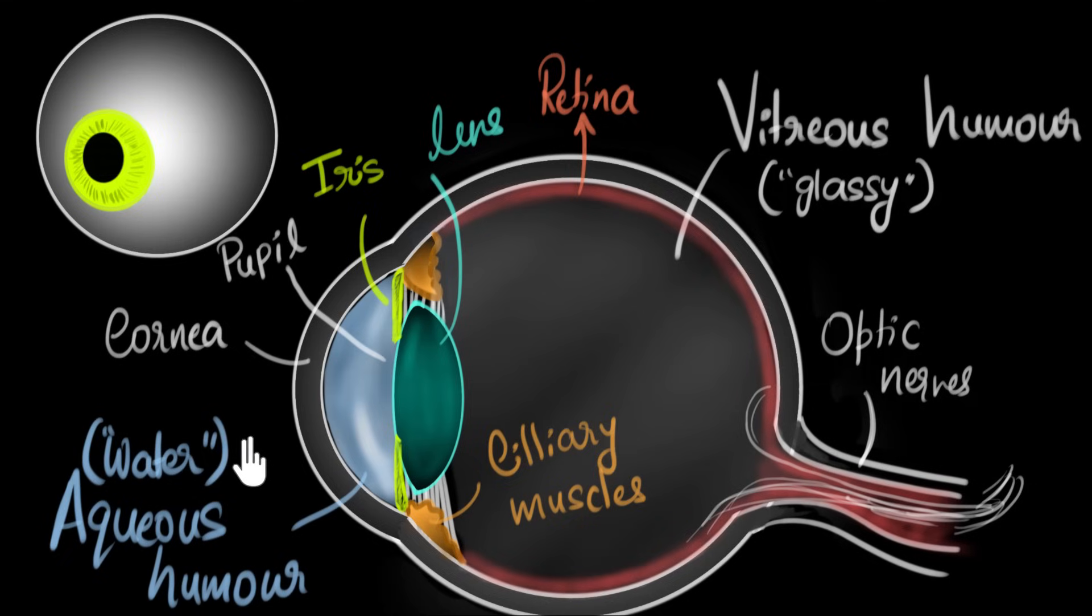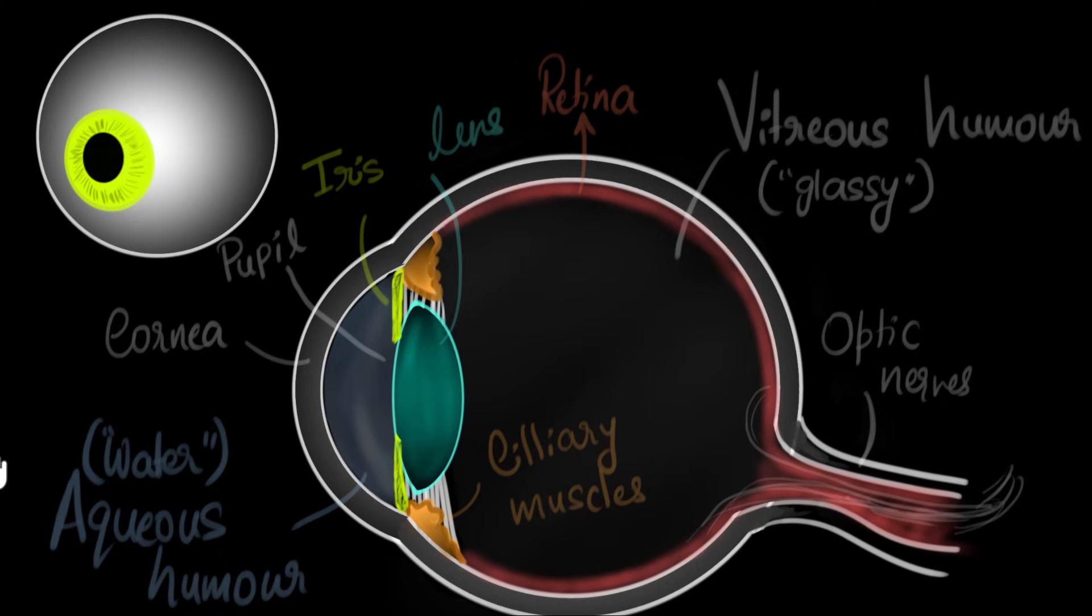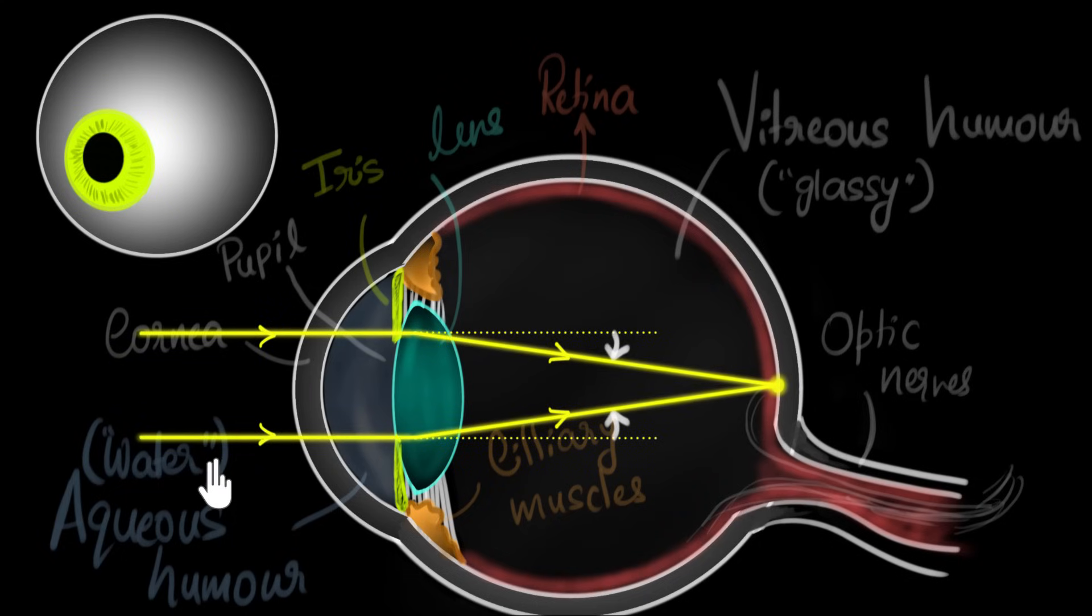This will make sense if we draw some rays of light. So let's dim all of these things and consider some rays of light. Alright, imagine we are looking at objects which are very far away. Then the rays of light from that object will be parallel to each other. And in order to see it clearly, those rays must get focused onto the retina. So the ray diagram would look somewhat like this.